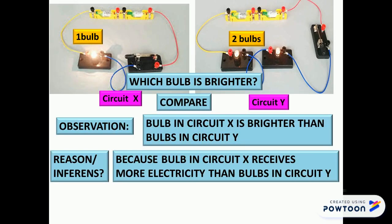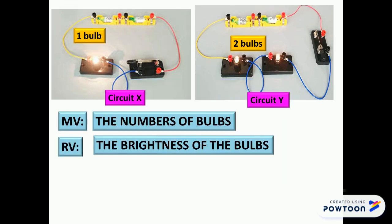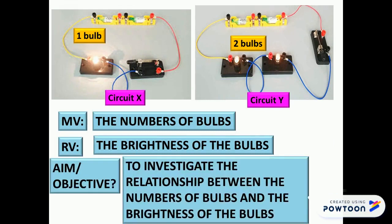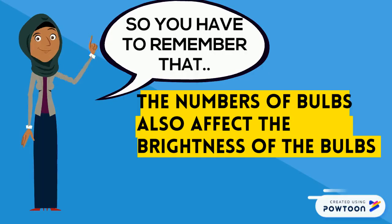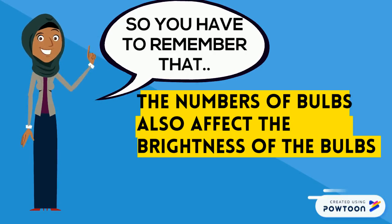So the aim or objective for this test is to investigate the relationship between the number of bulbs and the brightness of the bulbs. We have to remember that the number of bulbs also affects the brightness of the bulbs.